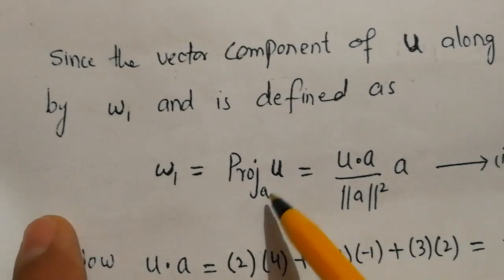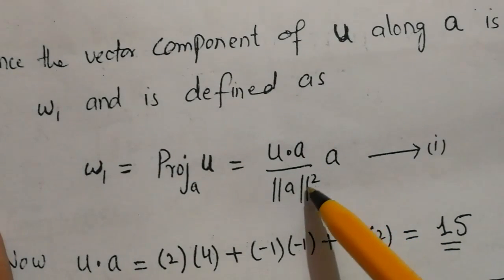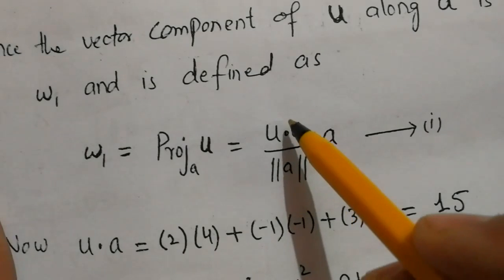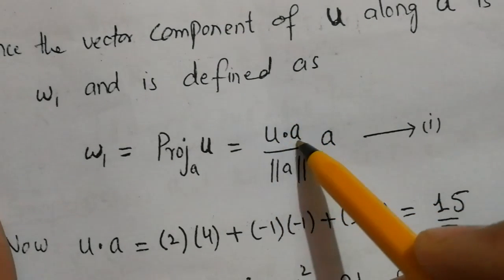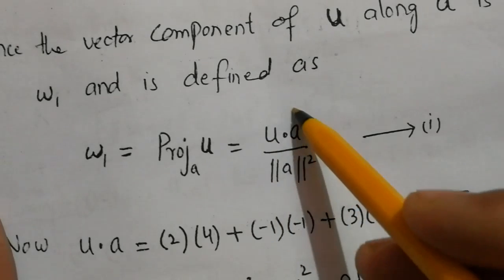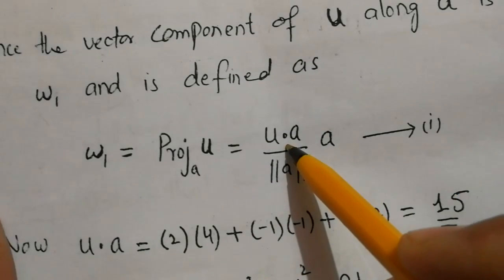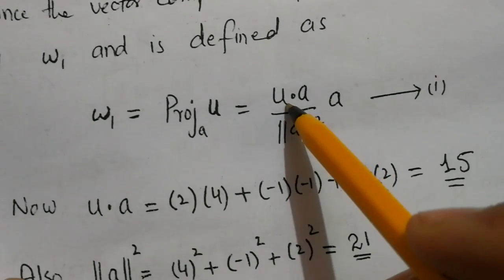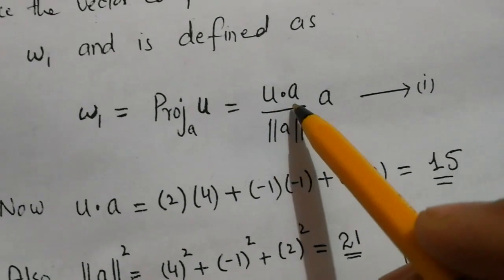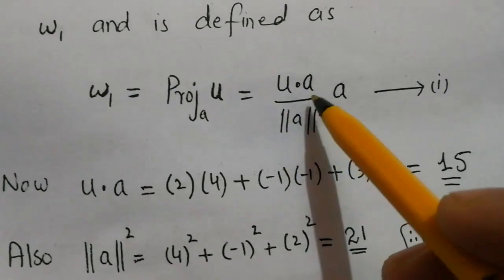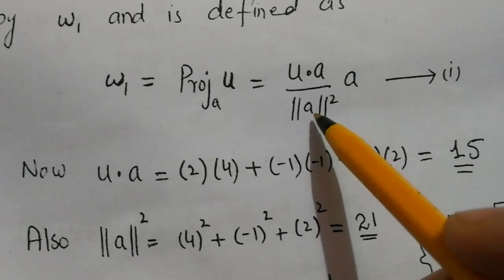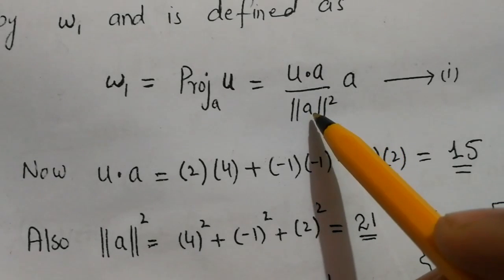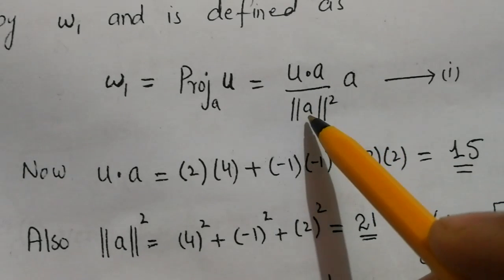The formula is w1 = (u · a / ||a||²) · a. We need to calculate u · a, which is the inner product or dot product. I have already explained inner product in my videos, so if anyone is not familiar with this they should consult my previous videos.